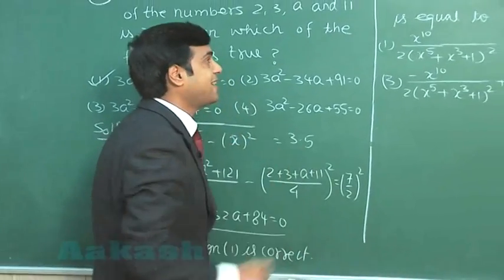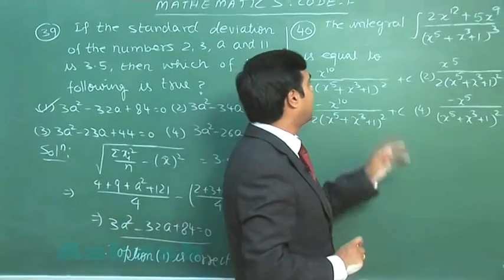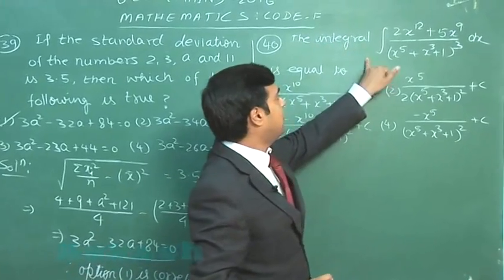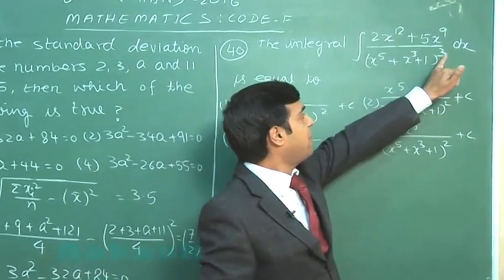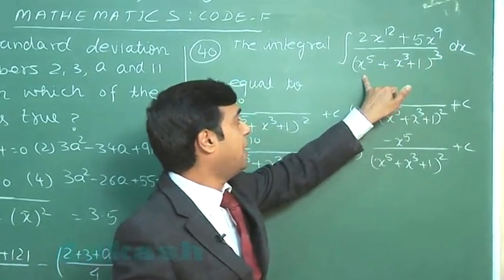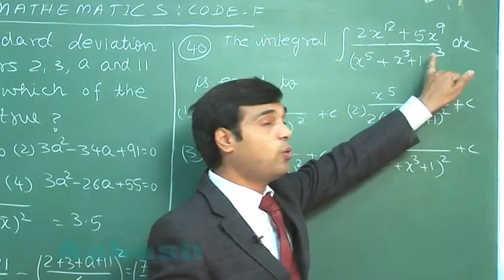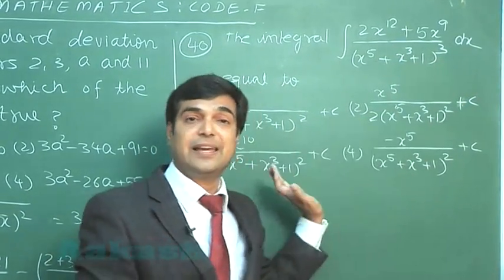Let us move to the next one, that is question number 40 from integral calculus. The integral 2x^12 plus 5x^9 divided by x^5 plus x^3 plus 1 whole cube dx is equal to.